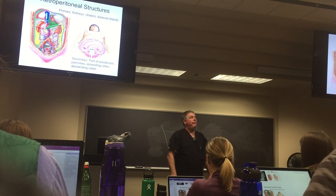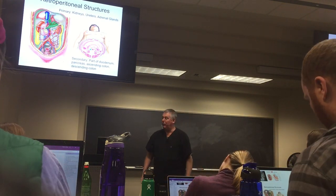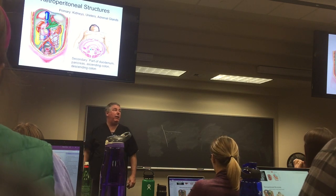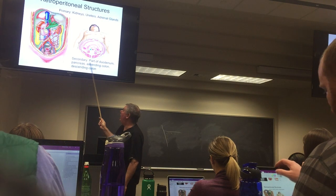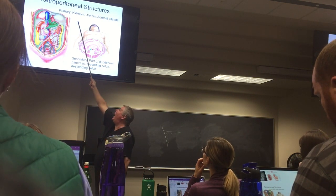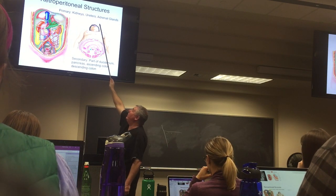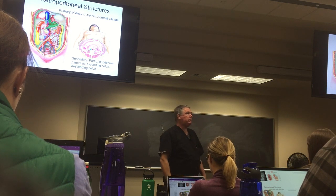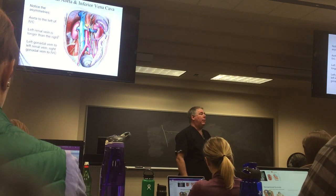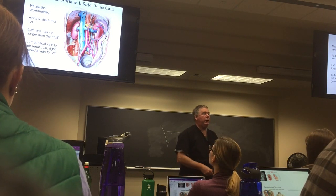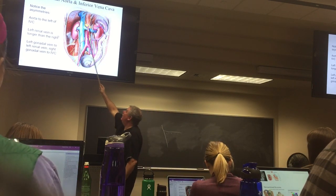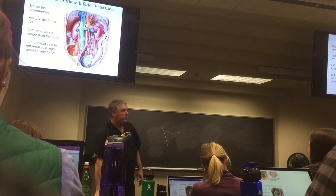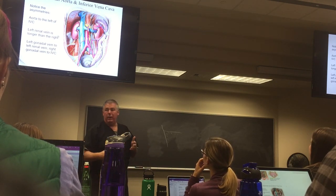Retroperitoneal structures — the things that were behind the parietal peritoneum and never surrounded by it usually have to do with the urogenital system, including the adrenal glands that sit on top of it, plus the abdominal aorta and the inferior vena cava. Look for big blue and big red. Notice that the inferior vena cava is on the right.